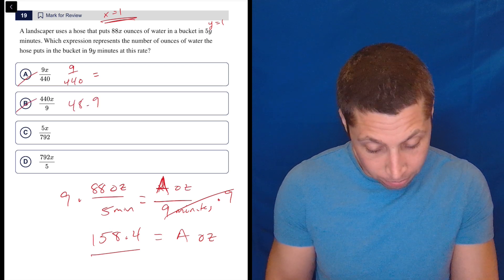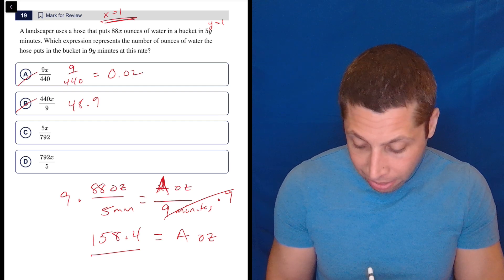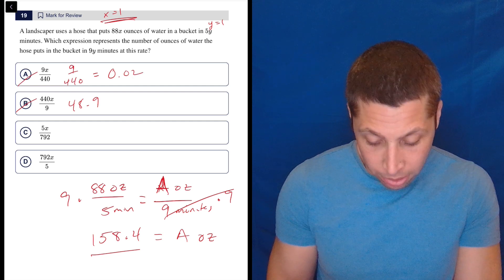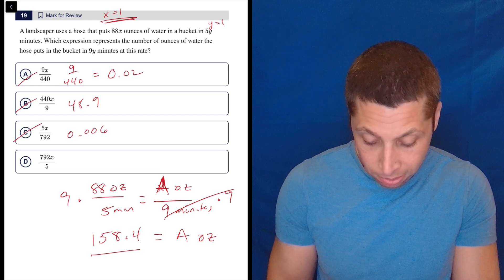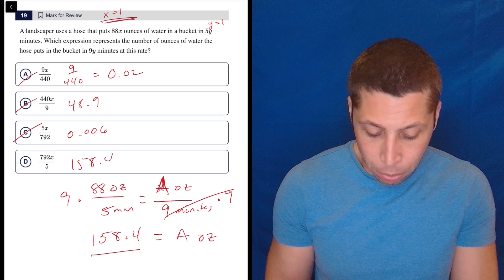48.9, no. And this is 0.02 or something. So 5 divided by 792, that's not going to work. That's 0.006. And 792 divided by 5 is 158.4.